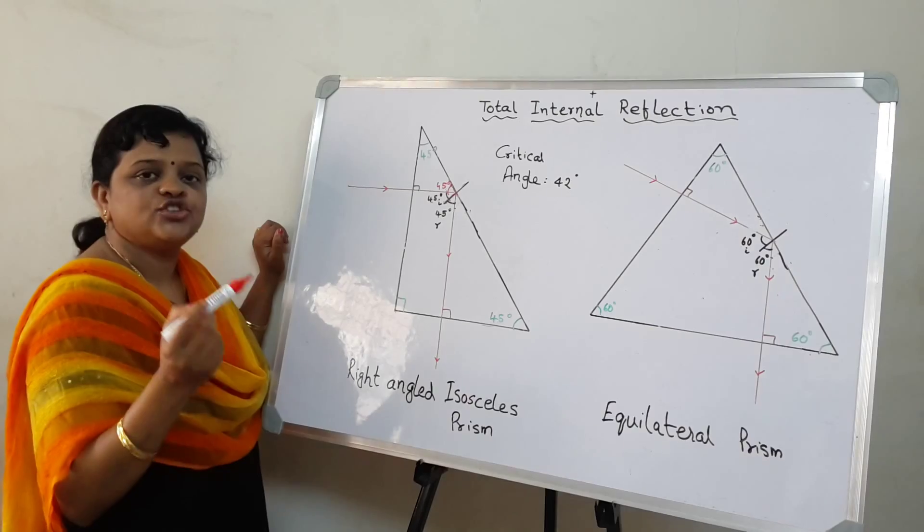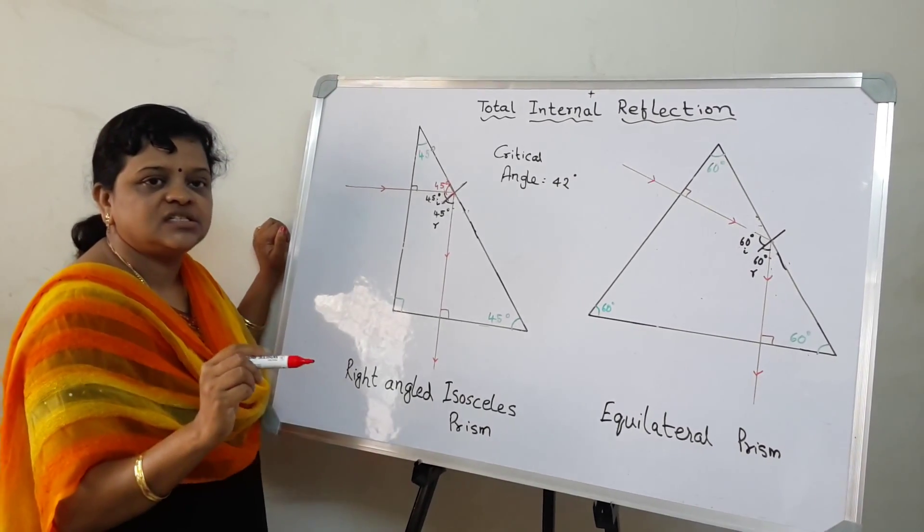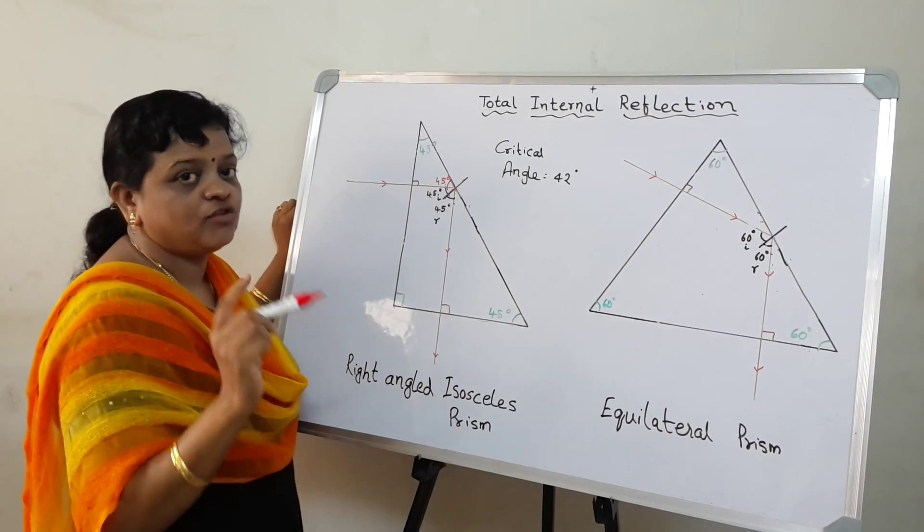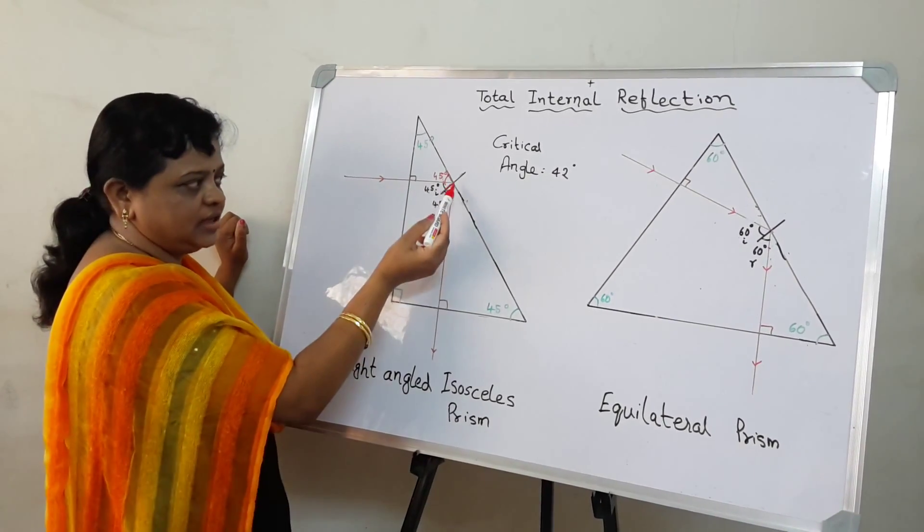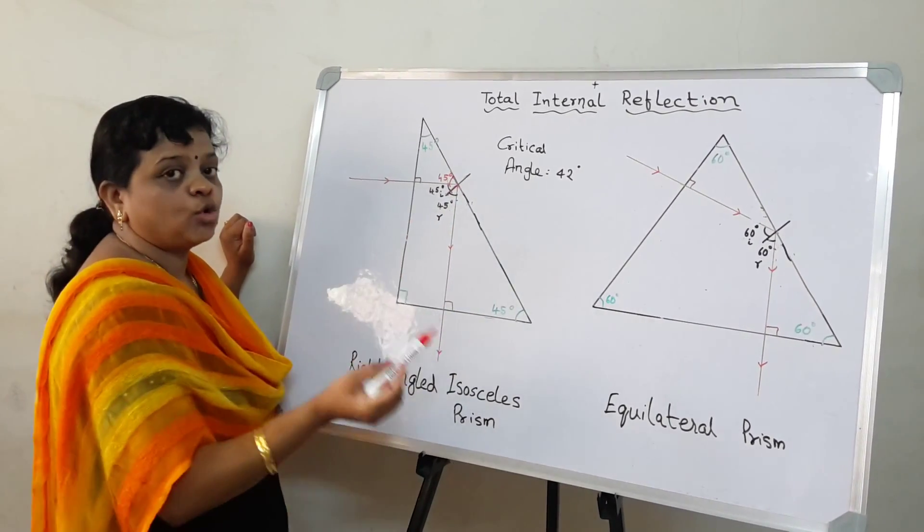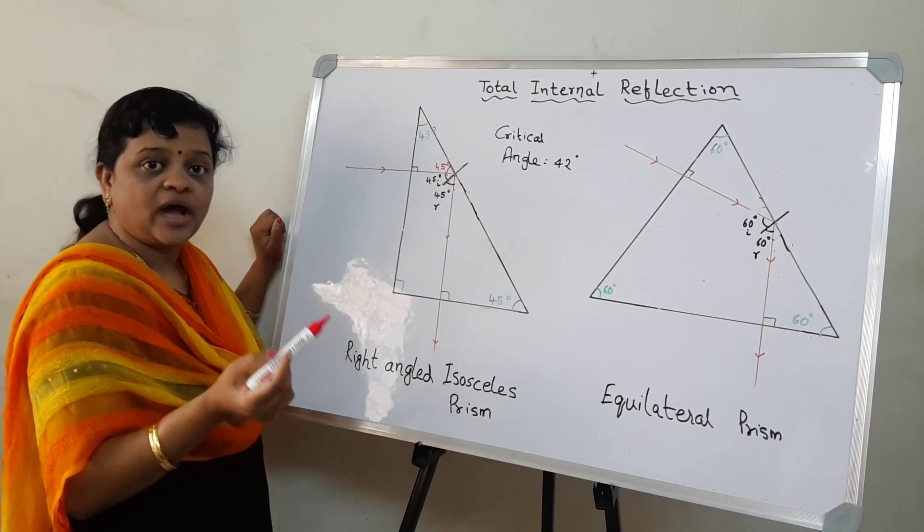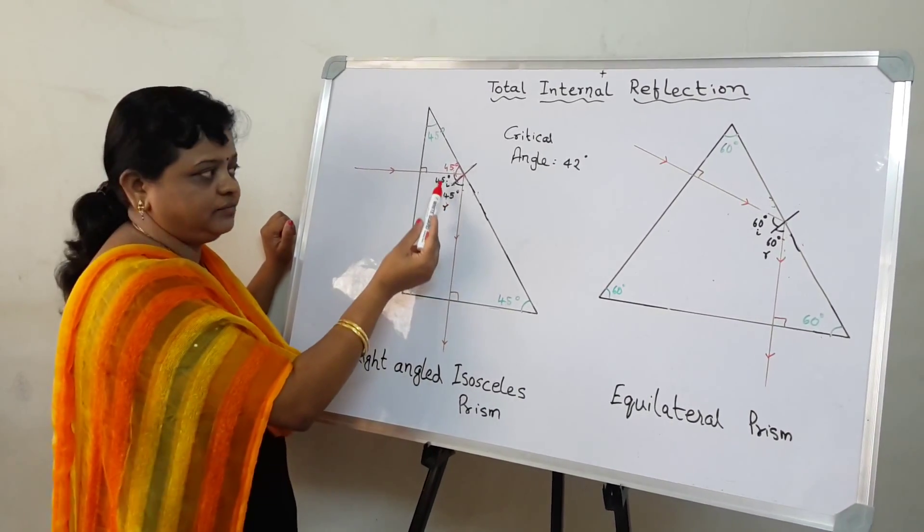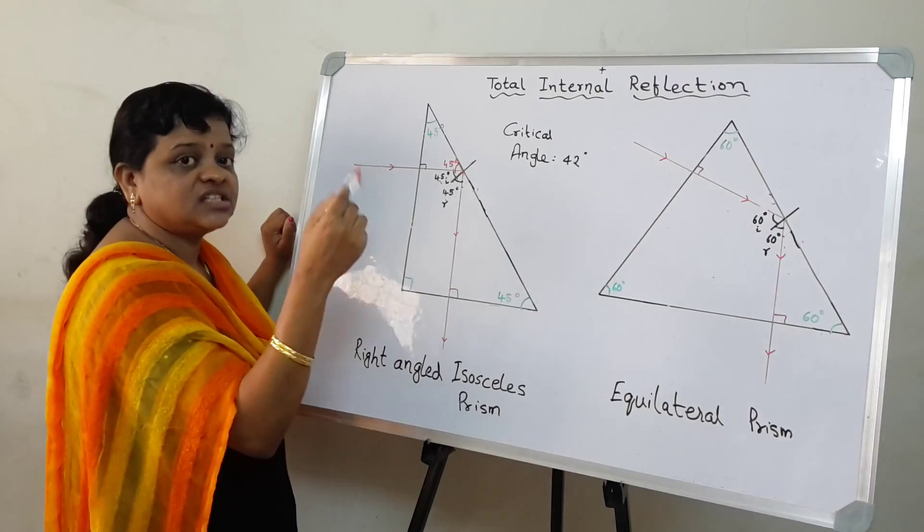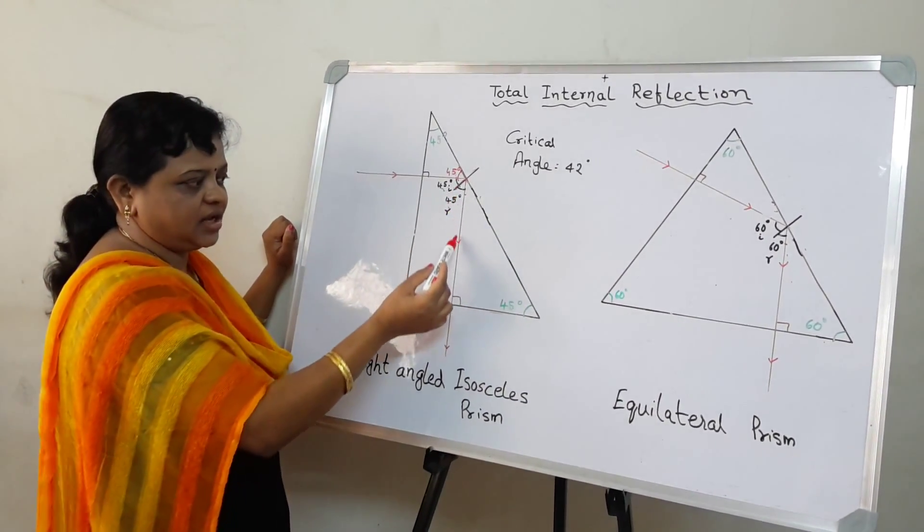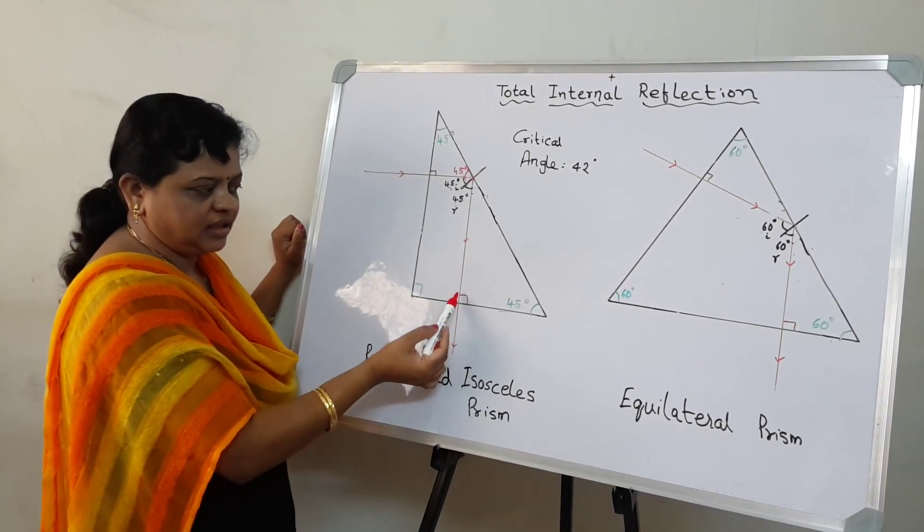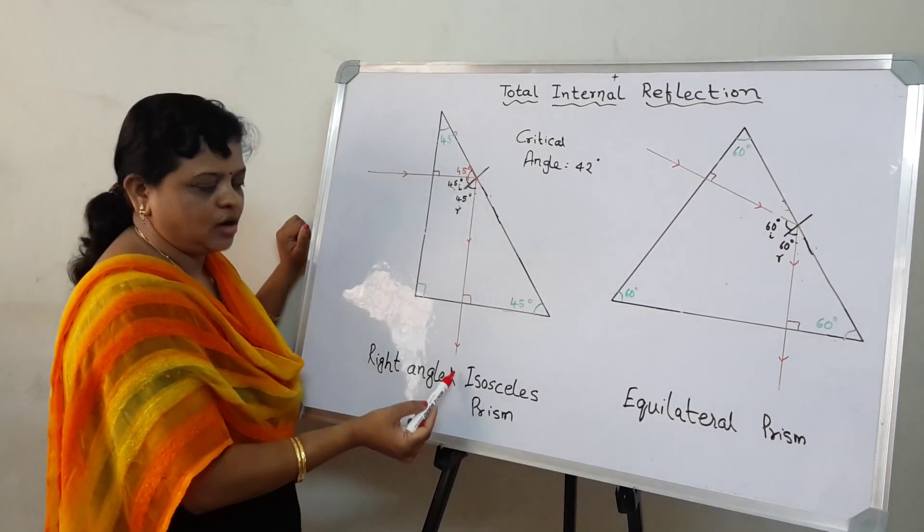Now, according to laws of reflection, angle of incidence should always be equal to angle of reflection. So this is 45, this is also 45, and hence it suffers total internal reflection. Why? Because this angle or the angle of incidence is greater than the critical angle which is 42 degrees. And hence it comes out here.